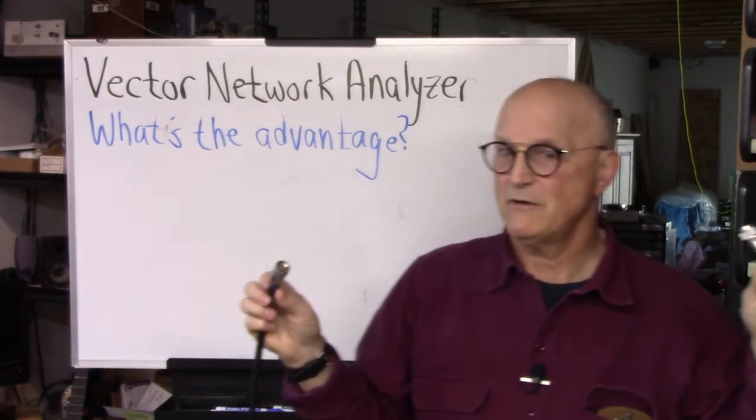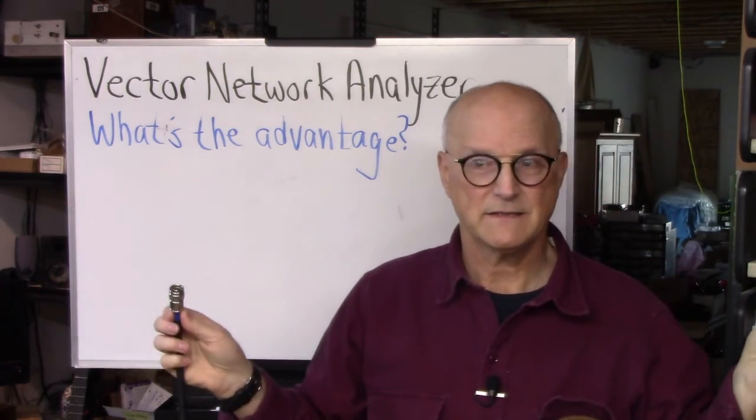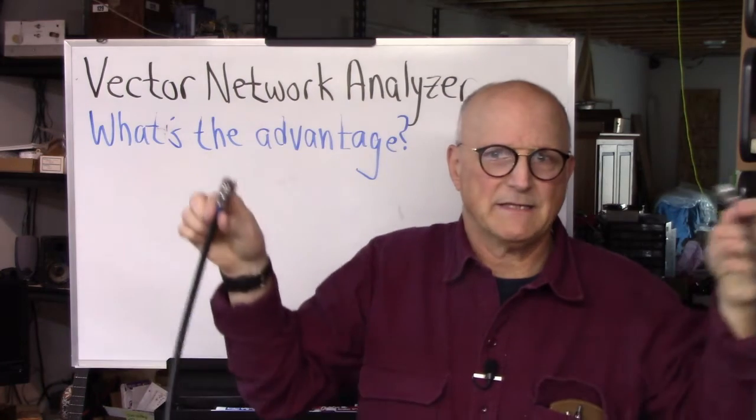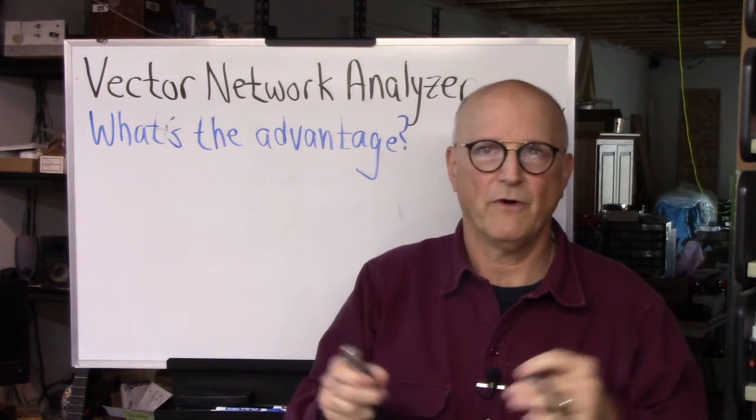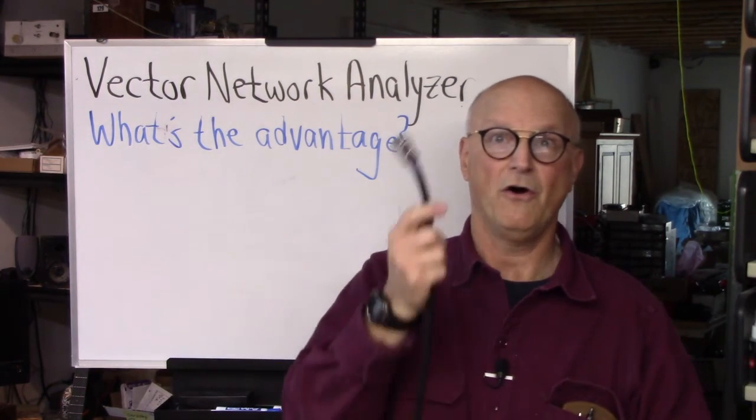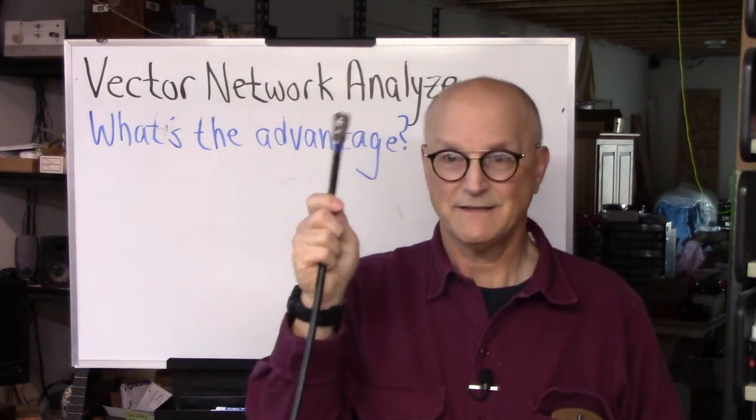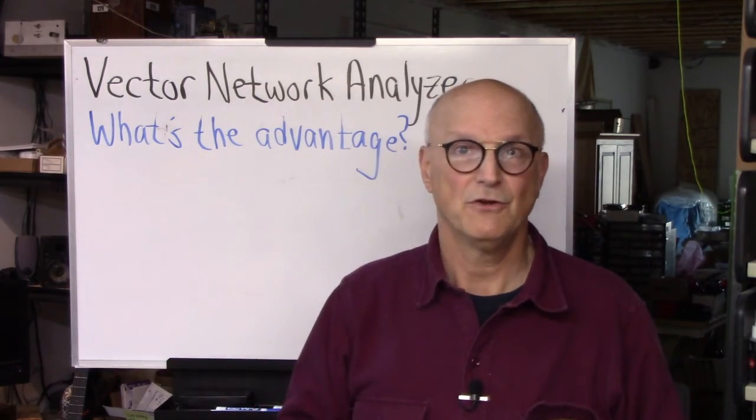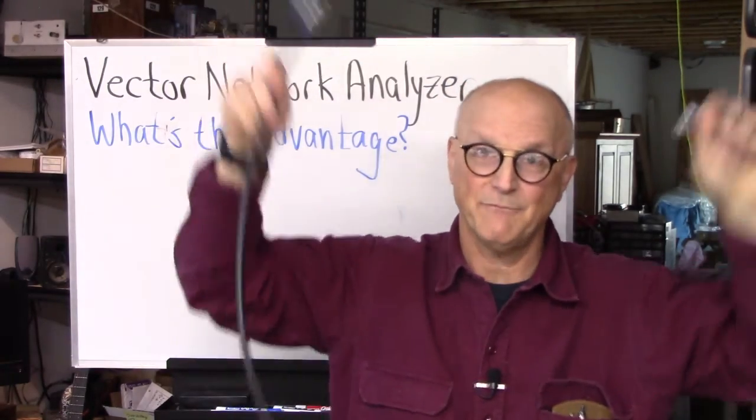And so when you make your measurement of the device under test, the VNA simply backs out the effects of the cables from what it's measuring. As a result, all you see is the device under test. You don't see the cable in that measurement.